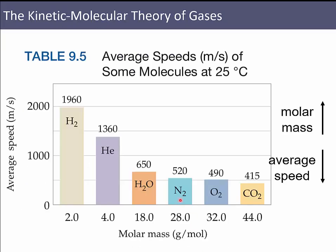Looking at molecular speeds at 25°C, we notice a trend: hydrogen has an average RMS speed of about 1,960 m/s, while carbon dioxide has an RMS velocity of 415 m/s. As you increase the molar mass of a gas, its root mean squared velocity decreases. To keep particles hitting the wall with the same force at the same pressure, one mole of hydrogen must be going much faster than one mole of carbon dioxide — it's a momentum-based relationship.